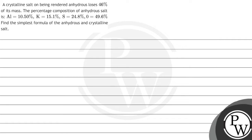Let's read this question. A crystalline salt on being rendered anhydrous loses 46% of its mass. The percentage composition of anhydrous salt is: aluminum = 10.50%, potassium = 15.1%, sulfur = 24.8%, oxygen = 49.6%. Find the simplest formula of the anhydrous and crystalline salt.